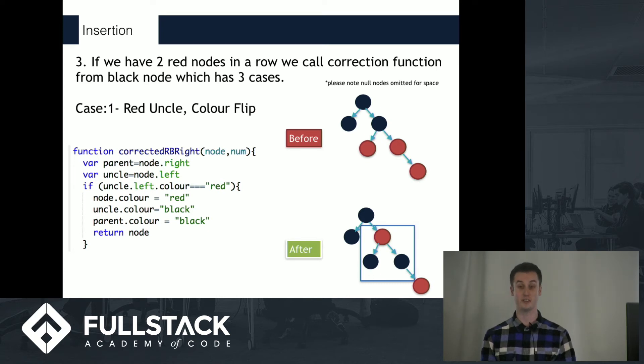So the three nodes that are in the box just become different colors. As you can see, there's no longer two red nodes in a row, and there's the same number of black nodes down each branch.